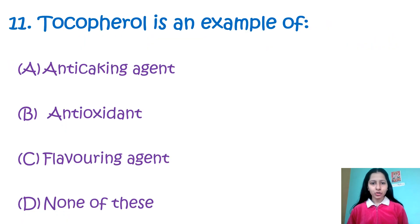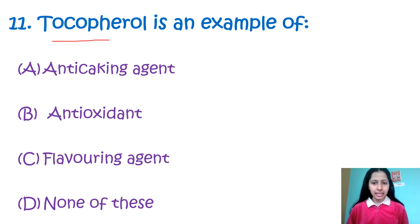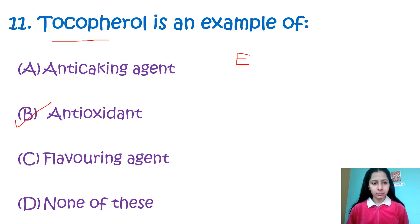Question number 11: Tocopherol is an example of — Option A: anti-caking agent, Option B: antioxidant, Option C: flavoring agents, Option D: none of these. Tocopherol is an antioxidant agent. We know it as vitamin E — that is its other name, tocopherol. It is also known as the anti-sterility vitamin or fat-soluble vitamin. So it is vitamin E, option number B, antioxidant.